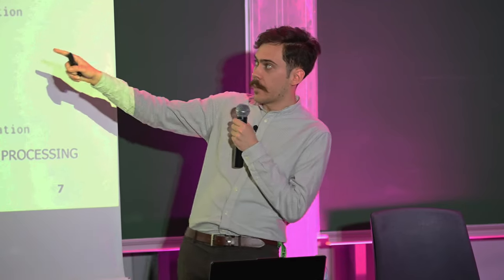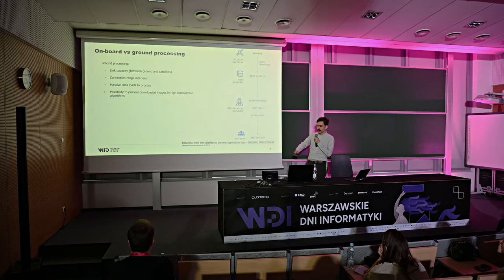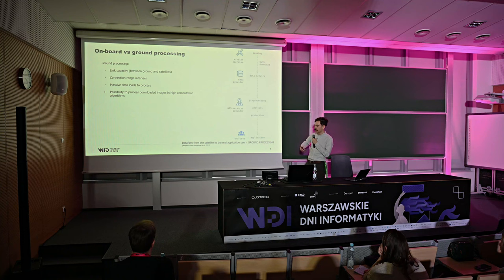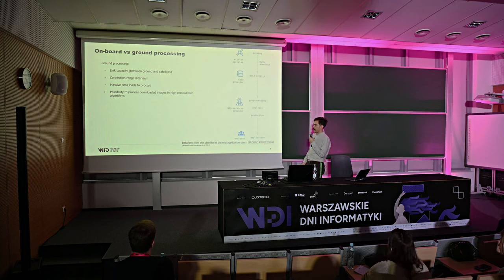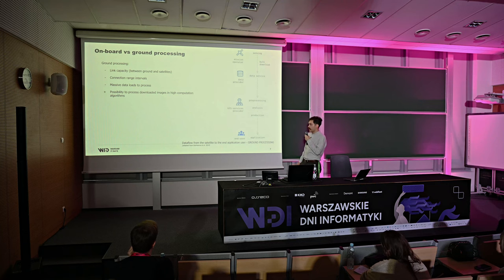The cons of ground processing include link capacity — we can't transfer terabytes per second between the ground station and satellite — connection range intervals, and massive data loads to process. One pro is the possibility to process downloaded data with high-computation algorithms, such as running it on AWS with a complex neural network.